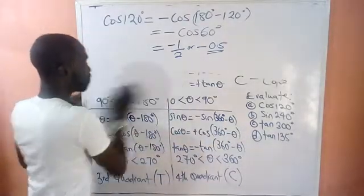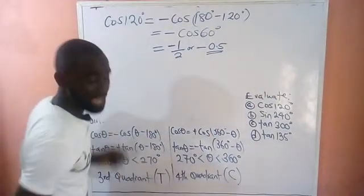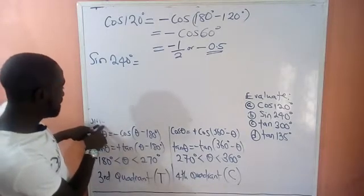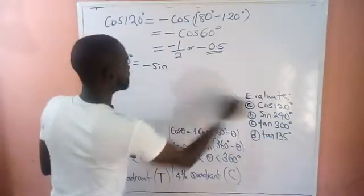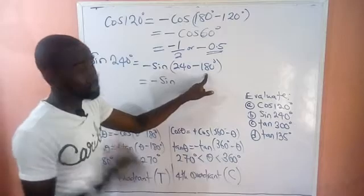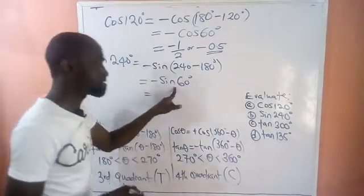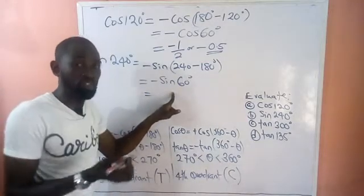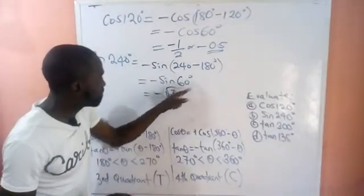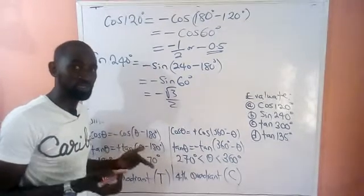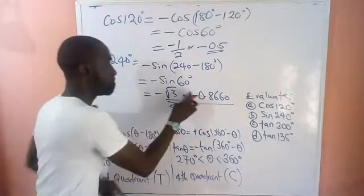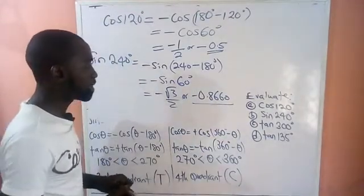The second question: evaluate sin 240°. 240° is found in the third quadrant, where sine must be negative. Using the formula θ − 180°: sin 240° = −sin(240° − 180°) = −sin 60°. The value of sin 60° equals √3/2, approximately 0.866. So the answer is −√3/2, which is approximately −0.866.